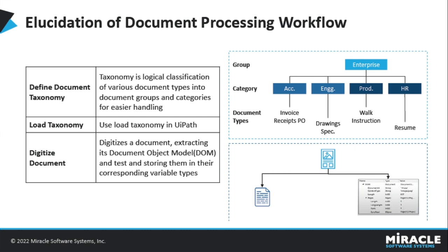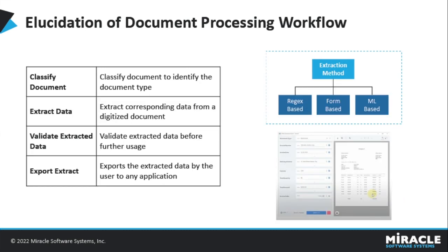Let's move to the next step, which is the Classify Document scope. Once the document has been digitized into a readable format, the next step is to classify it. Since we already defined different kinds of documents under the taxonomy, it becomes very easy for the robot to handle a document when it already knows what kind of document it is looking at. We will look more closely at this activity in UiPath Studio. Once classified, you take the classification result and use the appropriate extraction method.